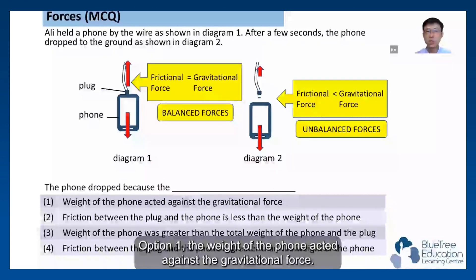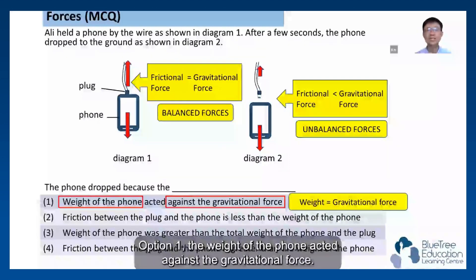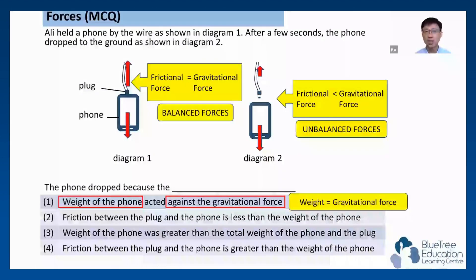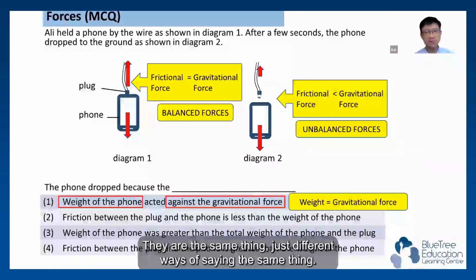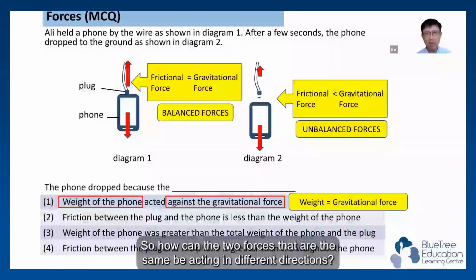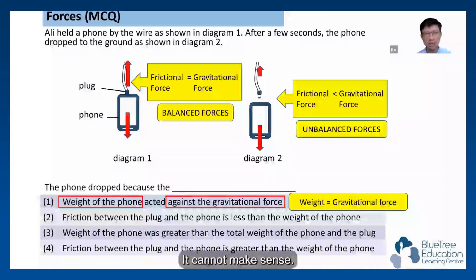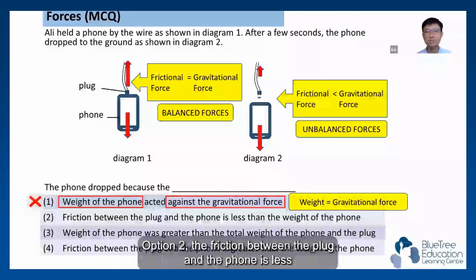Option 1: the weight of the phone acts against gravitational force. Now, weight is the same as gravitational force — they are the same thing, just different ways of saying it. So how can two forces that are the same act in different directions? It cannot make sense, so option 1 is wrong.